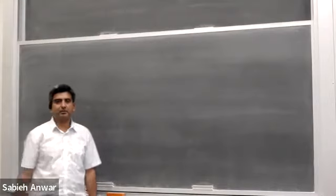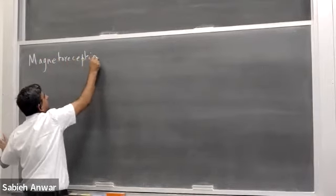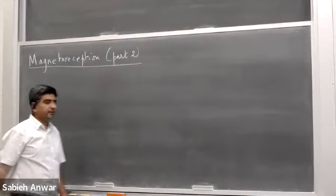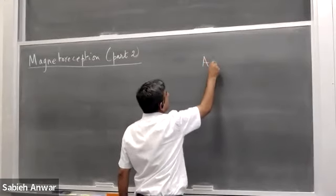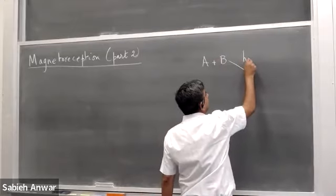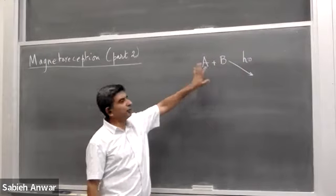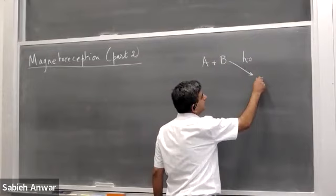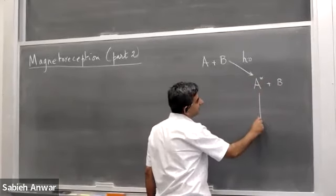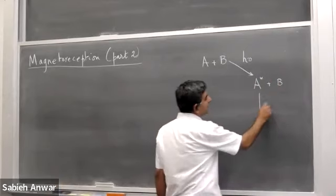We are going to continue our discussion on magnetoreception. If I start off with molecules A and B and light shines on this molecular pair — H-nu or H-f — light comes in and excites molecule A. A is in an excited state and it eventually transfers an electron to B. A is a donor of an electron and B accepts the electron, so some kind of electron transfer takes place.